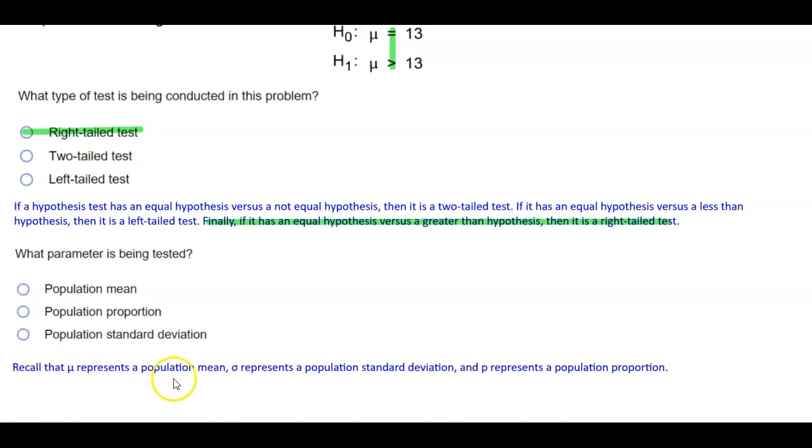Recall that mu represents the population mean, sigma represents the population standard deviation, and p represents the population proportion.